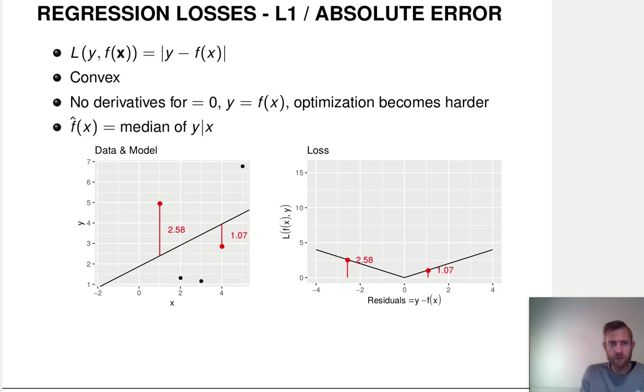An alternative loss function is the absolute error loss. We don't square the distance, we just take its absolute value. Why do we take its absolute value? Because the loss function always has to return a positive value, and it should return zero if our prediction is exactly correct. We can ensure that by just taking the absolute value. This is convex again, which is good.